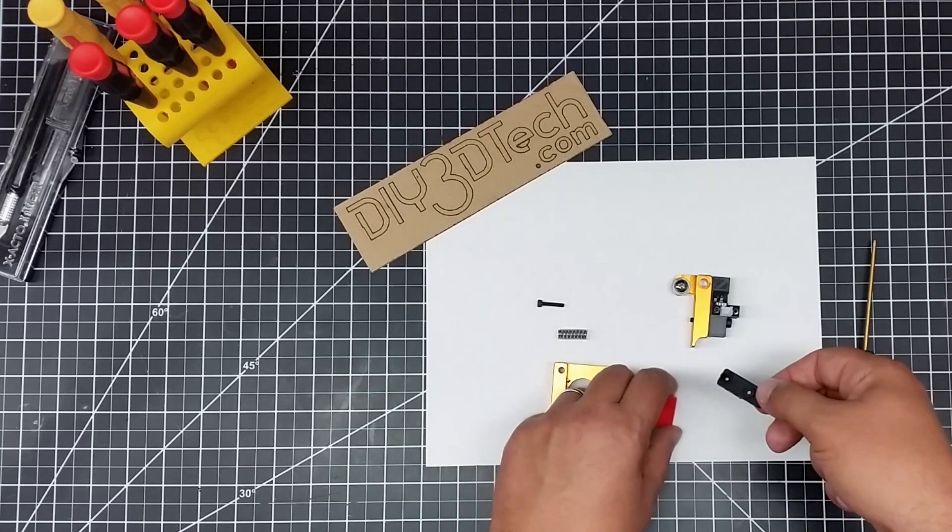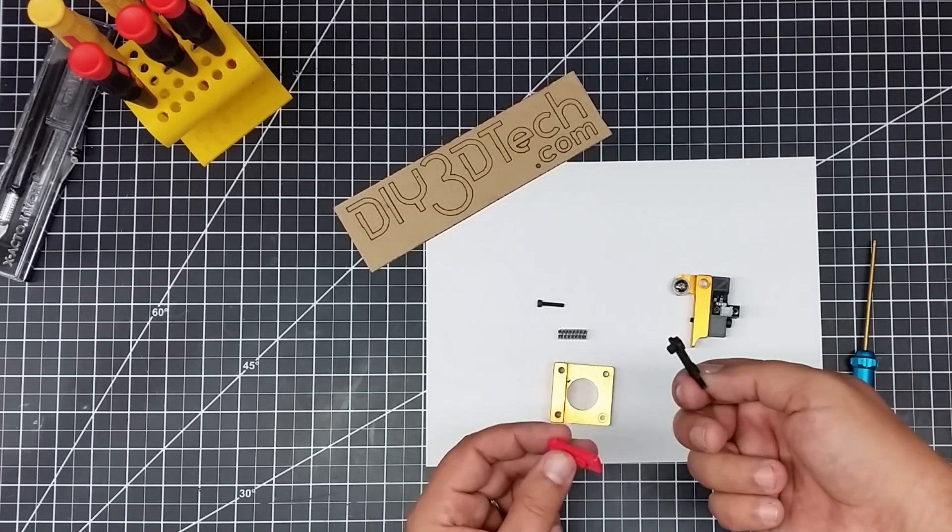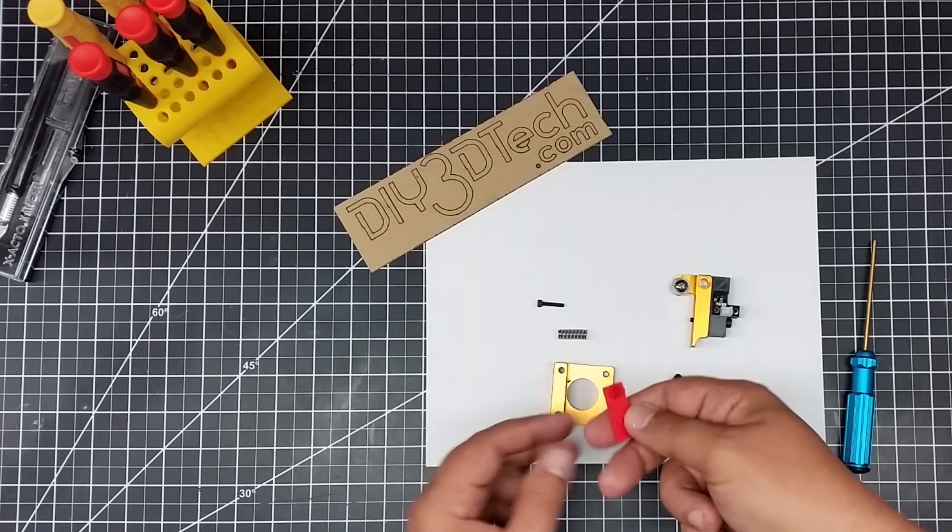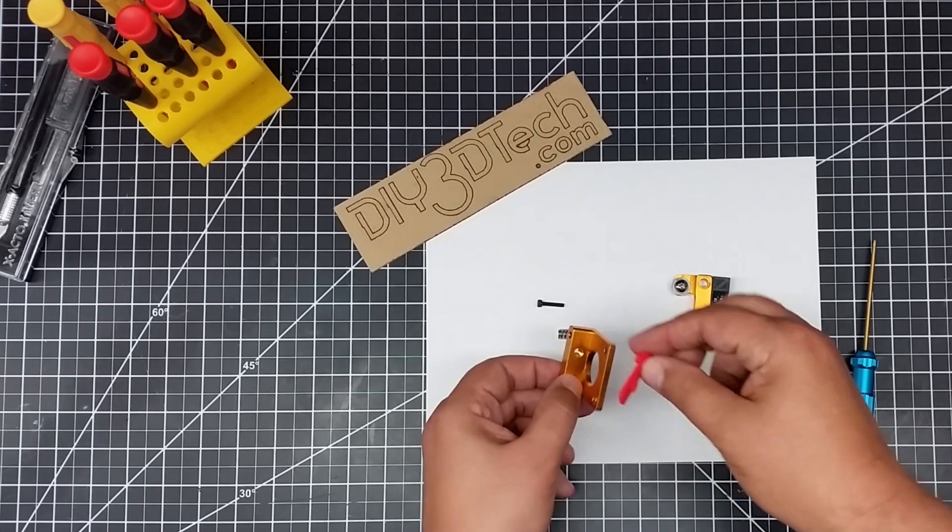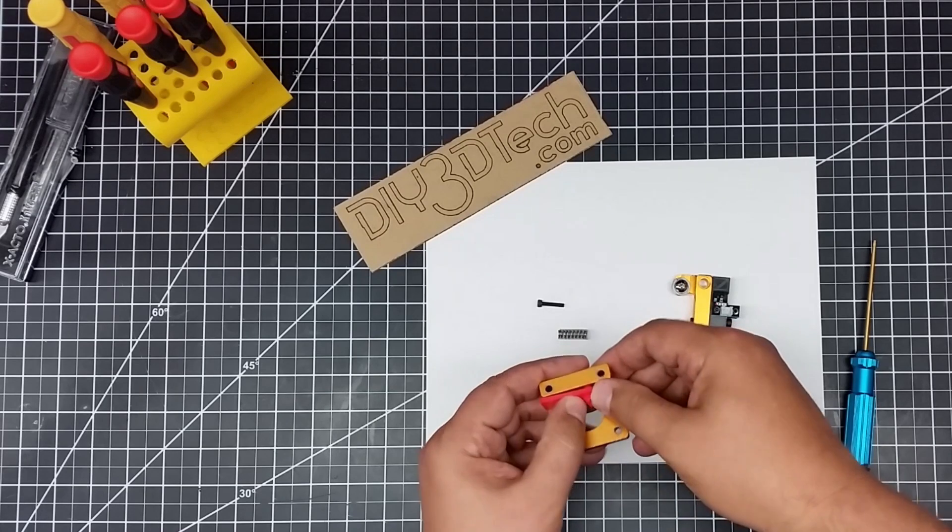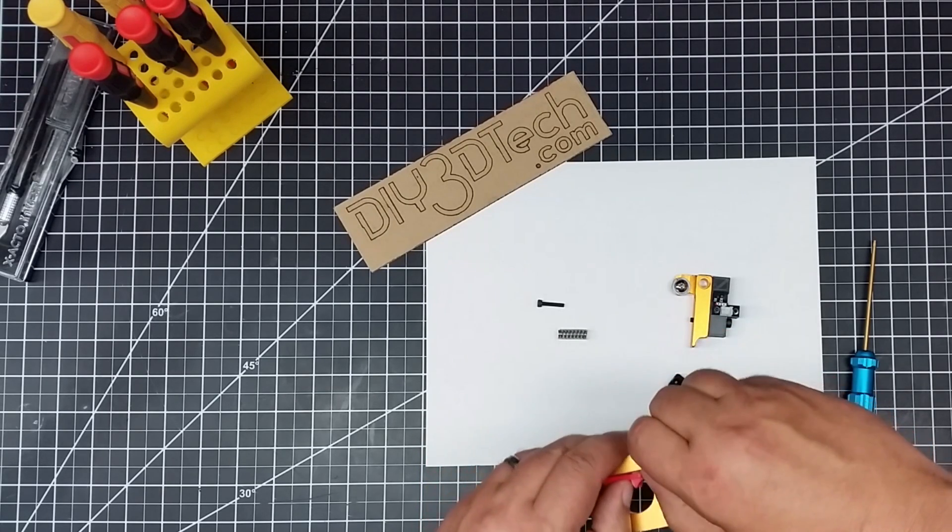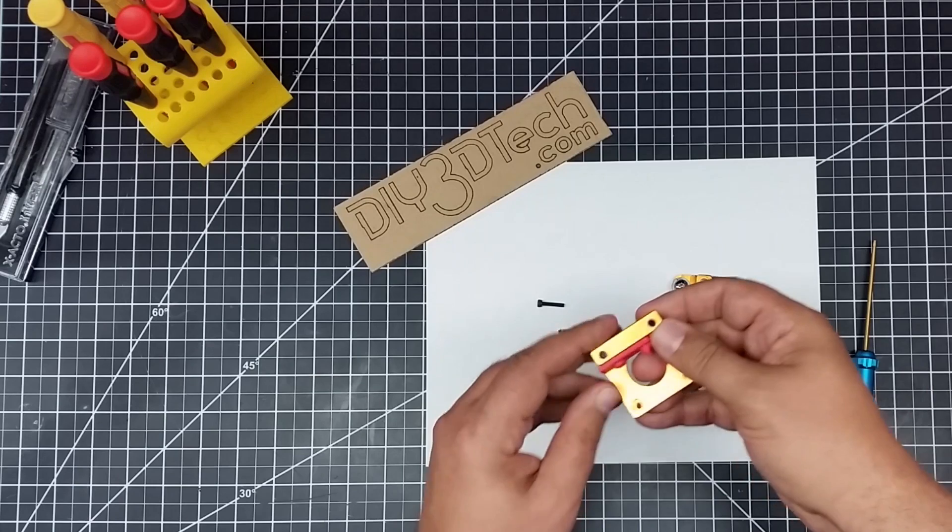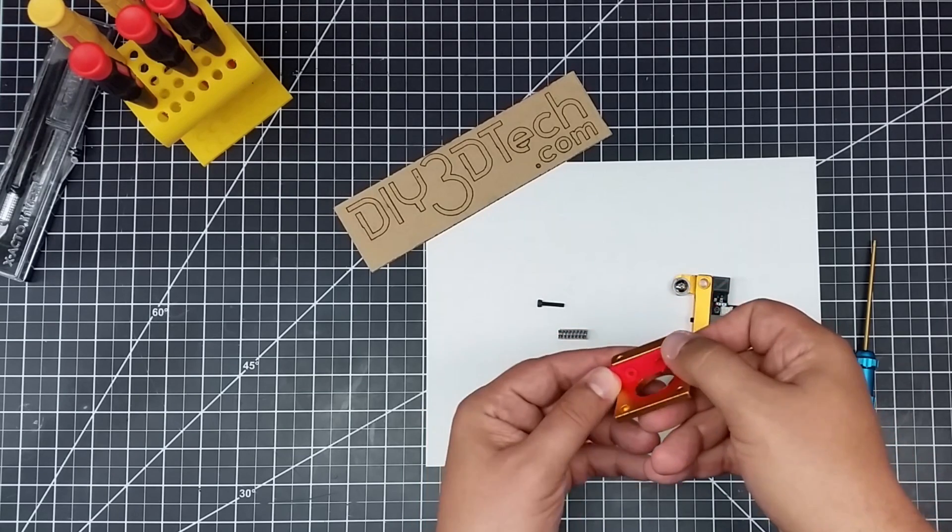So what we're going to do is simply replace this. Now we want to place this - it goes inside of here. It's a little bit of a pressure fit in there.